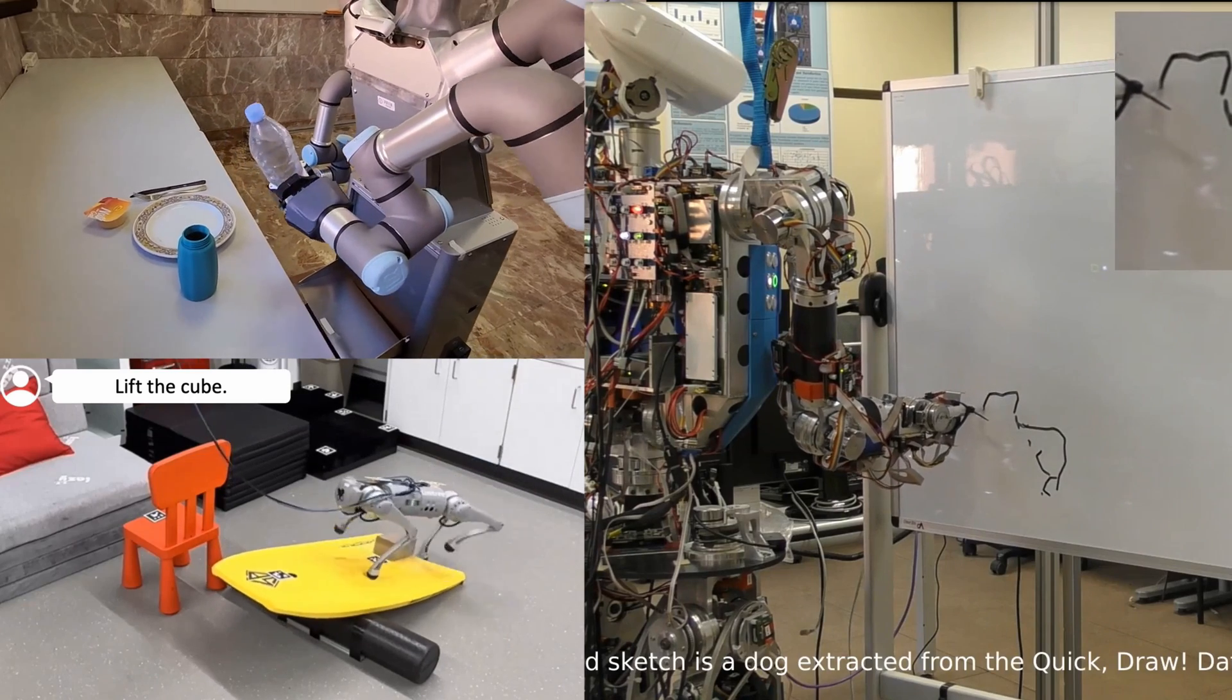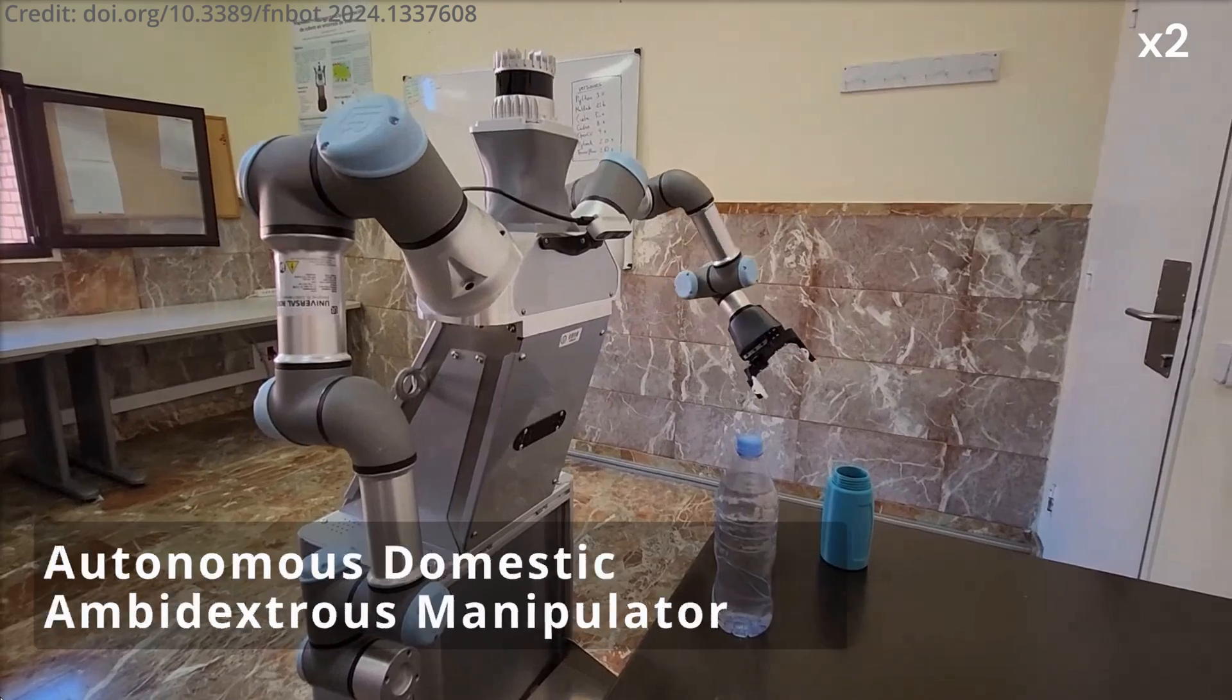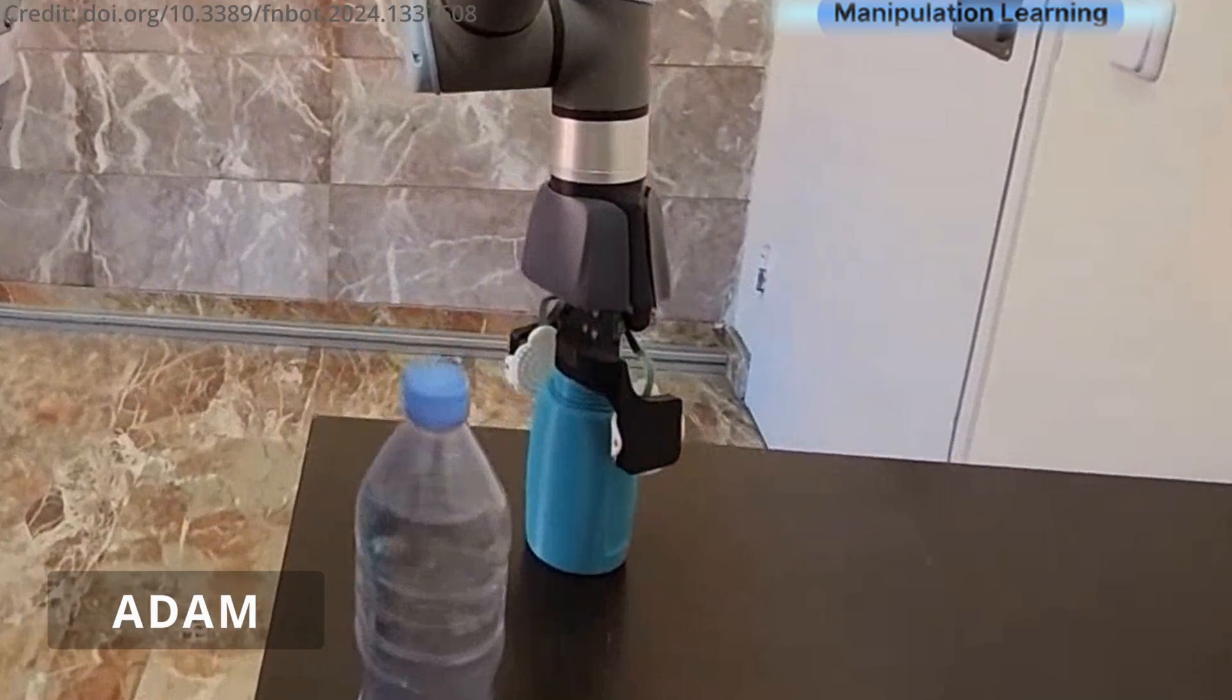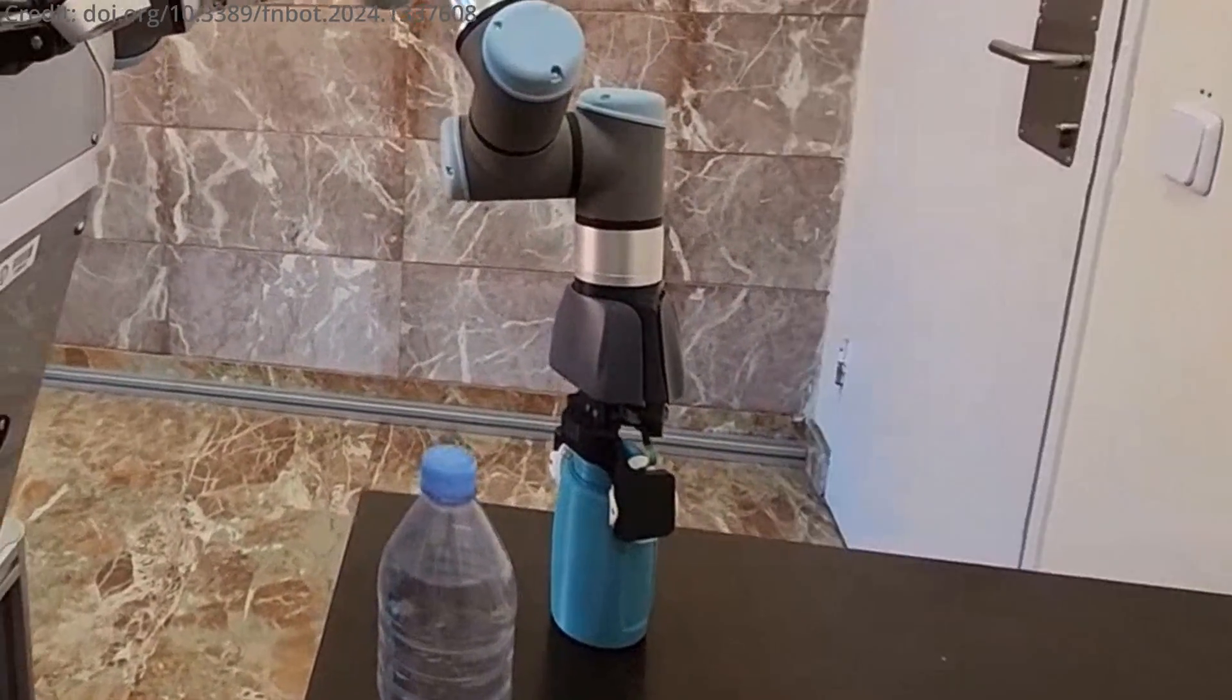A breakthrough in bimanual robot dexterity has just been unveiled with the introduction of the Autonomous Domestic Ambidextrous Manipulator, or ADAM for short, which is capable of intelligently managing household activities and likely much more soon.